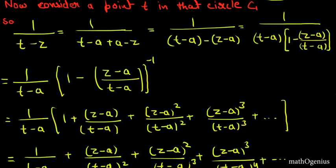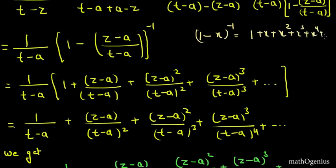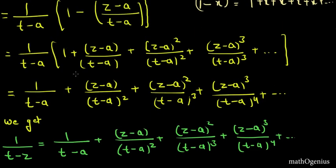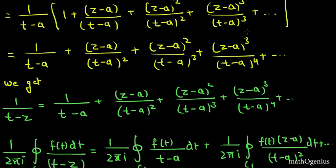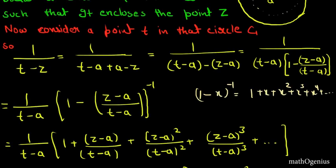Now we apply the binomial expansion of (1−x)⁻¹ = 1 + x + x² + x³ + ..., substituting x = (z−a)/(t−a). This gives: 1/(t−z) = 1/(t−a) + (z−a)/(t−a)² + (z−a)²/(t−a)³ + ... After multiplying through by 1/(t−a), we arrive at the expanded expression for 1/(t−z).